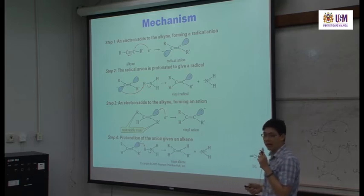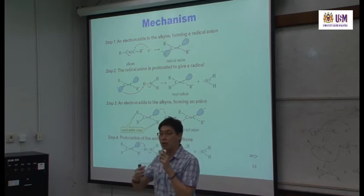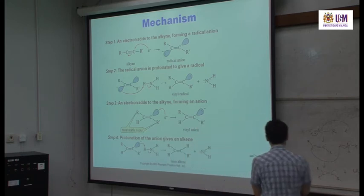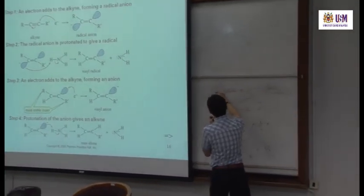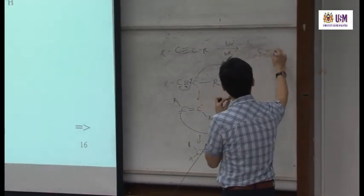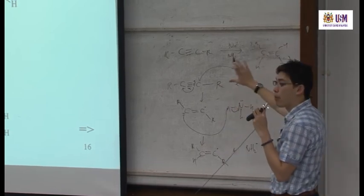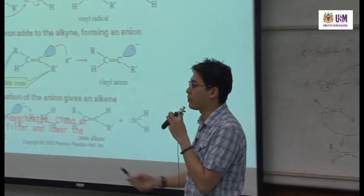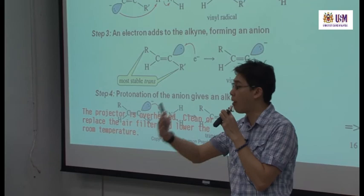In the mechanism exam question, we will show you an alkyne — for example, H–C≡C–CH2CH3 — reacting with sodium in ammonia, and ask you to propose a mechanism for this reaction. The question already shows you the product, so there's no issue of a second step — you just propose the mechanism to form the given product.